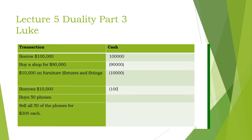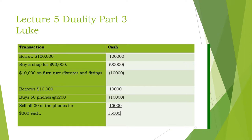He borrowed another 10,000, then spent 10,000 buying phones. He sold them for 15,000 and received 15,000. So his cash balance at the end of the period is 15,000. You borrow money from the bank — 100,000 comes into your account. You spend it on a shop and fixtures and fittings. Fixtures and fittings are just things that go into a shop — shelves, a fridge or freezer, and so on.